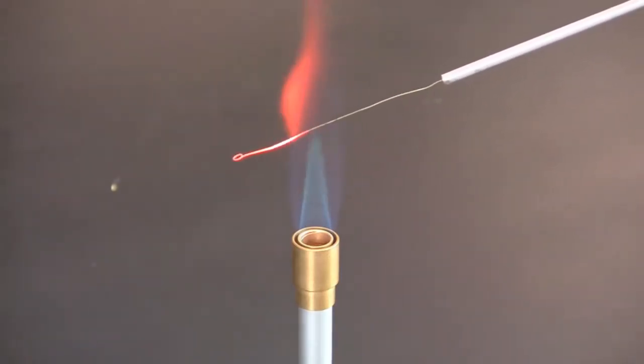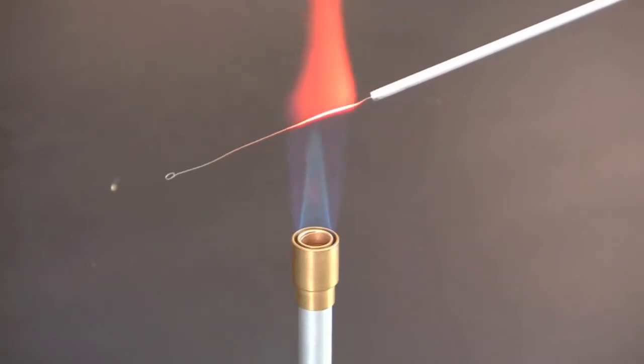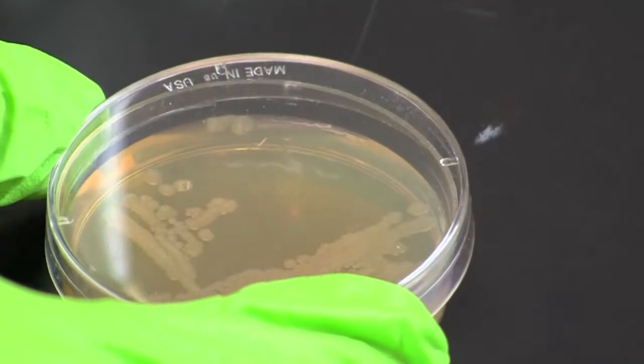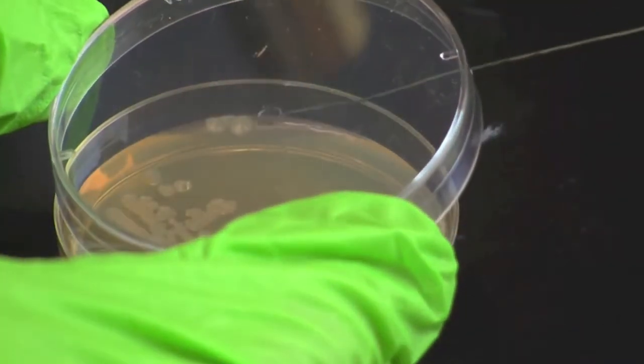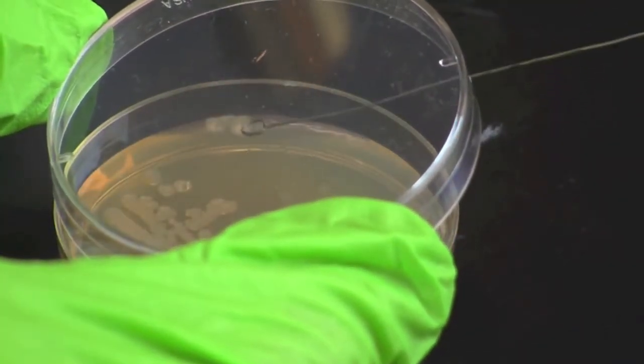Flame an inoculating loop to sterilize and allow it to cool. You can lightly touch the loop on an empty spot on the bacterial plate to make certain the loop is cool.